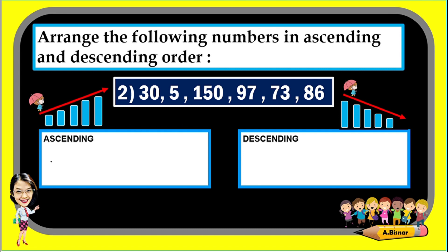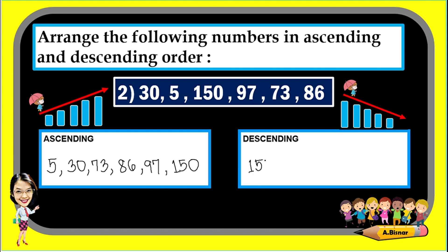Let us have more examples. For ascending order, we start from the lowest: five, next thirty, then seventy-three, next eighty-six, then ninety-seven, and the last one is one hundred fifty. For descending, it is the vice versa of ascending: one hundred fifty, ninety-seven, eighty-six, seventy-three, thirty, and then five.